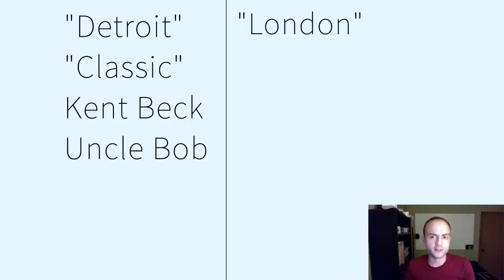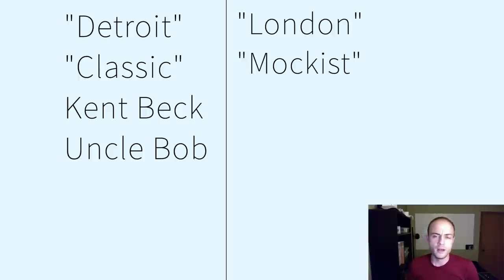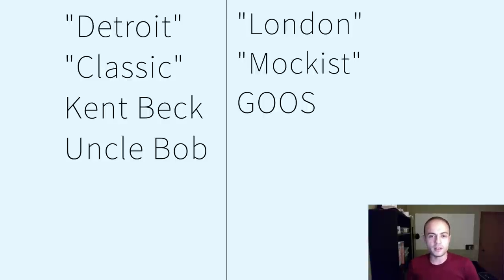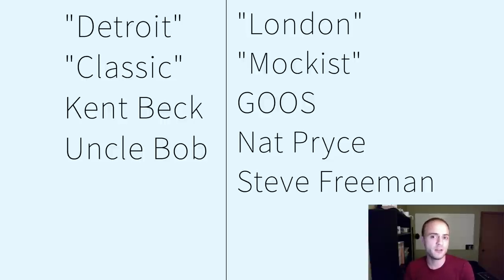The other school we're going to talk about is London School TDD, named because the extreme programming community in London did some very interesting iterations on the concepts of TDD. Martin Fowler refers to this as mockist TDD, which sounds pejorative, so I don't tend to use it much. If you've heard of the book GOOS — that stands for Growing Object-Oriented Software Guided by Tests, written by Nat Price and Steve Freeman — it's a really excellent book. It really opened my mind to a whole new way of looking at tests driving the design of my code by actually coupling them to the implementation, which is considered a no-no on the other side of the aisle, but has some interesting design implications that I think are very healthy.